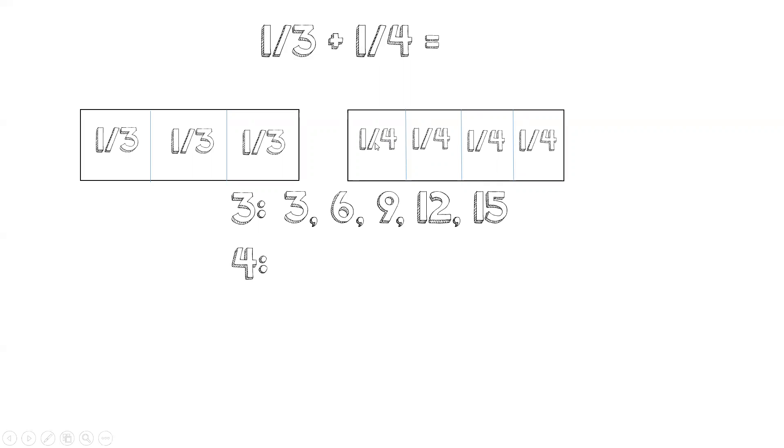The multiples of four for this one-fourth is four, eight, twelve, sixteen, or twenty. So we're going to look at these two lists, and we see that the number they have in common, the lowest common number they have is twelve.